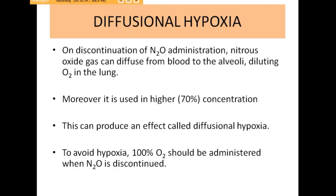Another important property of nitrous oxide is diffusional hypoxia. On discontinuation of nitrous oxide, it can diffuse from blood to the alveoli, diluting the concentration of oxygen in the lungs. Because it is used in high concentration, a large number of oxygen molecules are displaced as nitrous oxide — having lower blood solubility — leaves the blood very fast, fills the alveoli, and replaces oxygen molecules, causing hypoxia. To avoid diffusional hypoxia, 100% oxygen should be administered in the last minutes when nitrous oxide is discontinued.